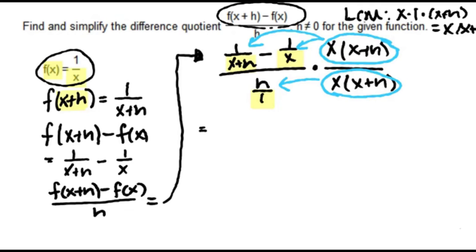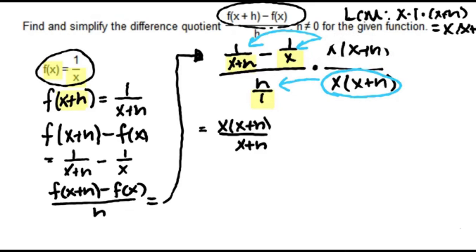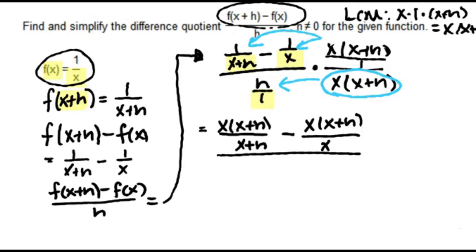Applying the distributive property in the numerator, I'll have x times x plus h over x plus h. When you multiply fractions, you multiply numerator times numerator and denominator times denominator. So 1 times x plus h keeps that denominator as x plus h. For the second term, that gives us x times x plus h over x. In the denominator, I'll leave it in factored form: h times x times x plus h.